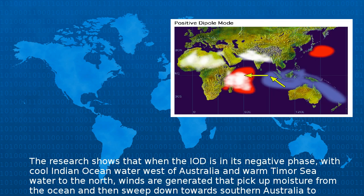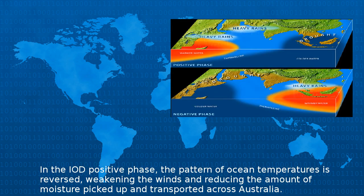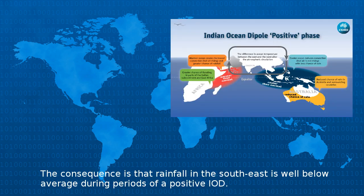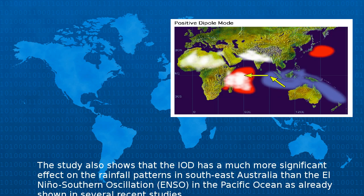The research shows that when the IOD is in its negative phase, with cool Indian Ocean water west of Australia and warm Timor Sea water to the north, winds are generated that pick up moisture from the ocean and sweep down towards southern Australia to deliver higher rainfall. In the positive phase, the pattern of ocean temperatures is reversed, weakening the winds and reducing the amount of moisture transported across Australia. The consequence is that rainfall in the southeast is well below average during periods of a positive IOD. The study also shows that the IOD has a much more significant effect on rainfall patterns in southeast Australia than the El Niño–Southern Oscillation in the Pacific Ocean.